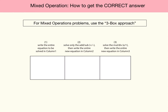The best way to work a mixed operation and get the correct answer is to use what I call the three box approach. Essentially, you're going to write down the initial equation, then work out the addition and subtraction independent of the multiplication and division, and then work out the multiplication and division.